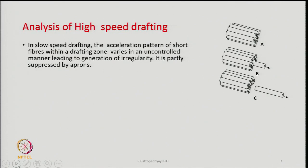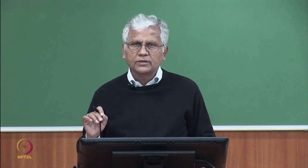In slow speed drafting, the acceleration pattern of short fibers within a drafting zone varies in an uncontrolled manner, leading to irregularity. This is partly suppressed by aprons — the very purpose of aprons is to allow fibers to accelerate only when they reach the nip of the front rollers, so fibers are guided through the drafting zone and will not accelerate out of turn.